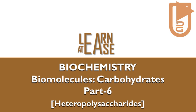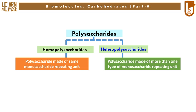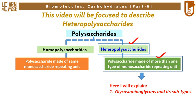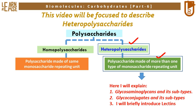Part 6: Heteropolysaccharides. In my previous video I explained a few examples of homopolysaccharides, whereas in this video I will be focusing on heteropolysaccharides, which are polysaccharides made up of more than one type of monosaccharide repeating unit. The examples I will explain are glycosaminoglycans and its subtypes, glycoconjugates and its subtypes, and I will briefly introduce lectins.